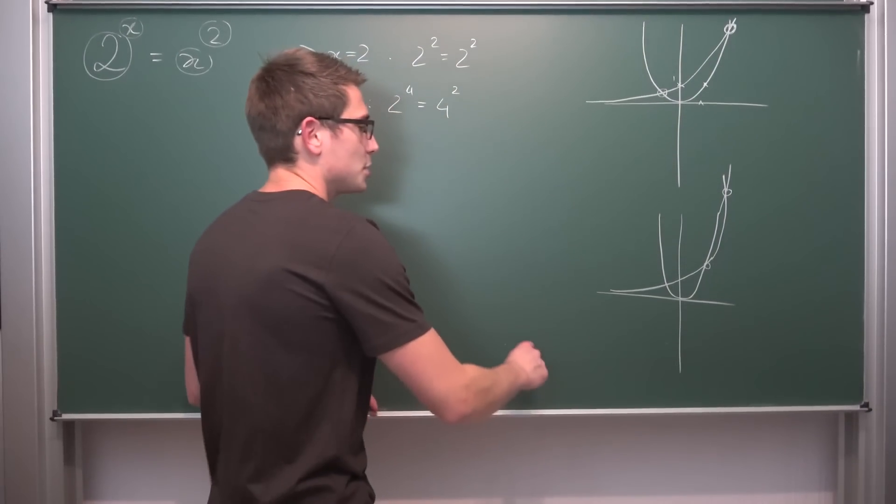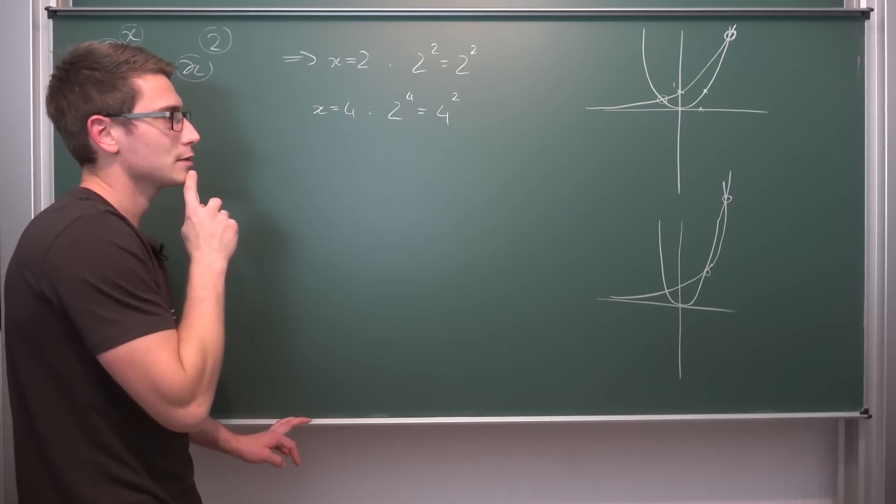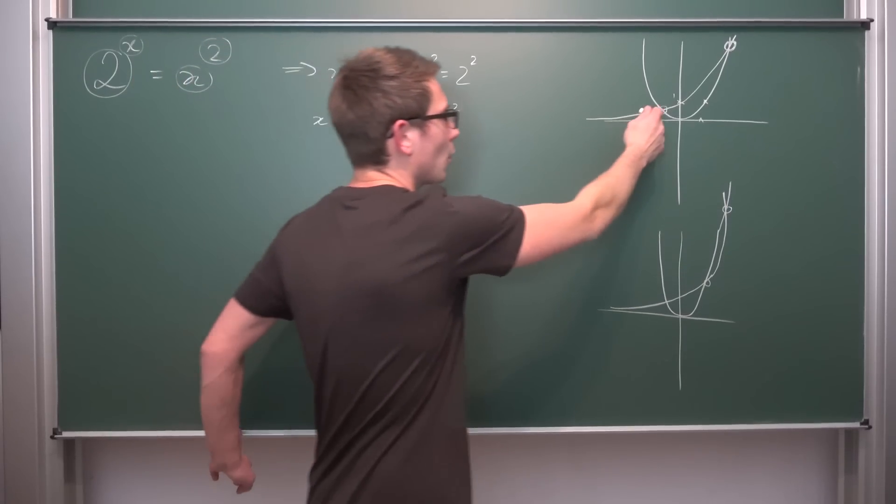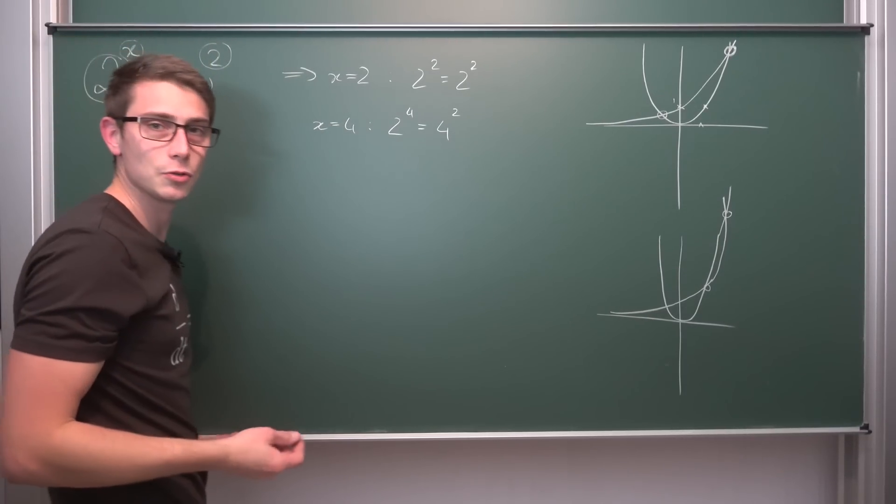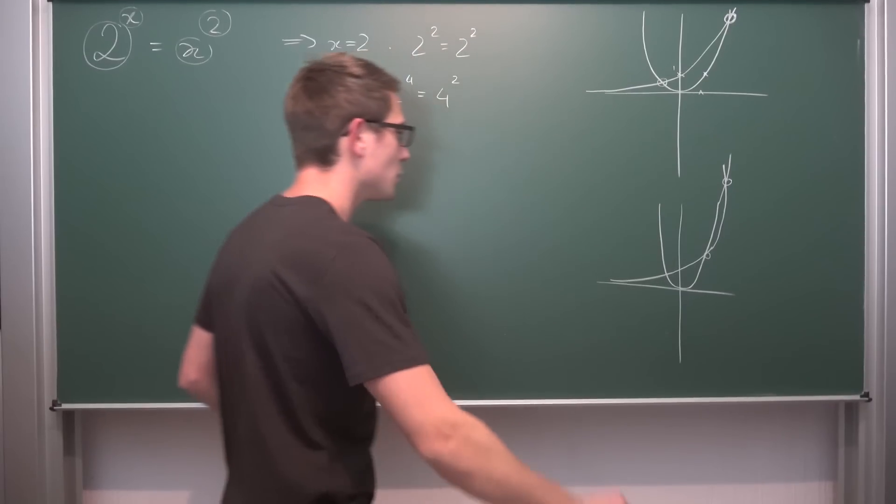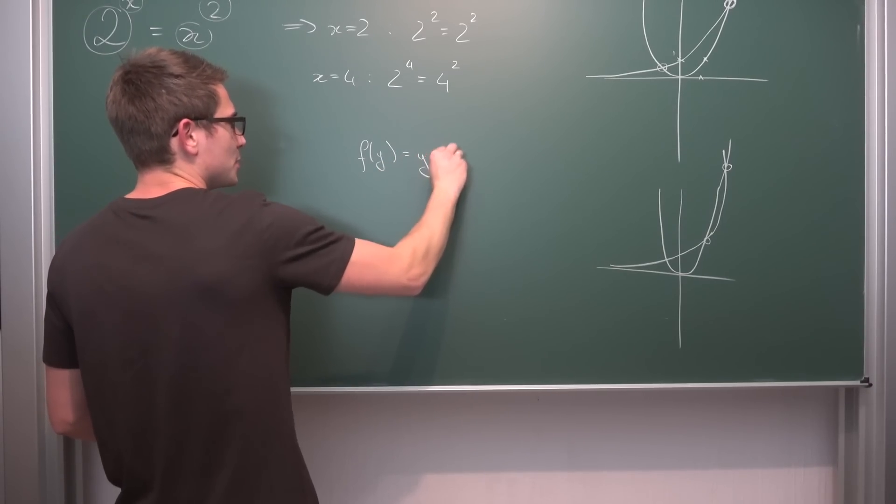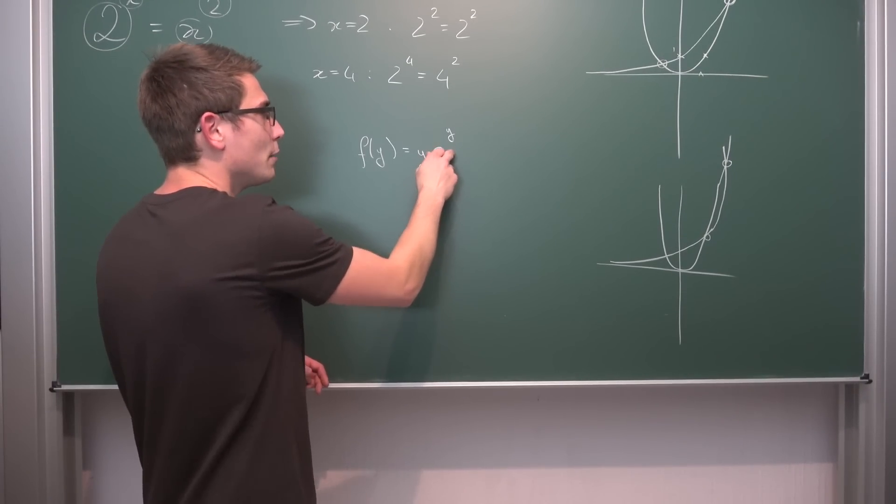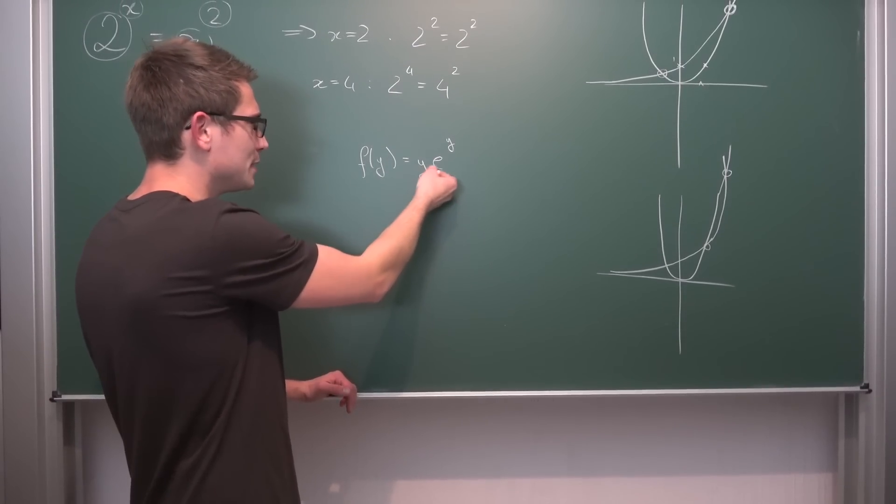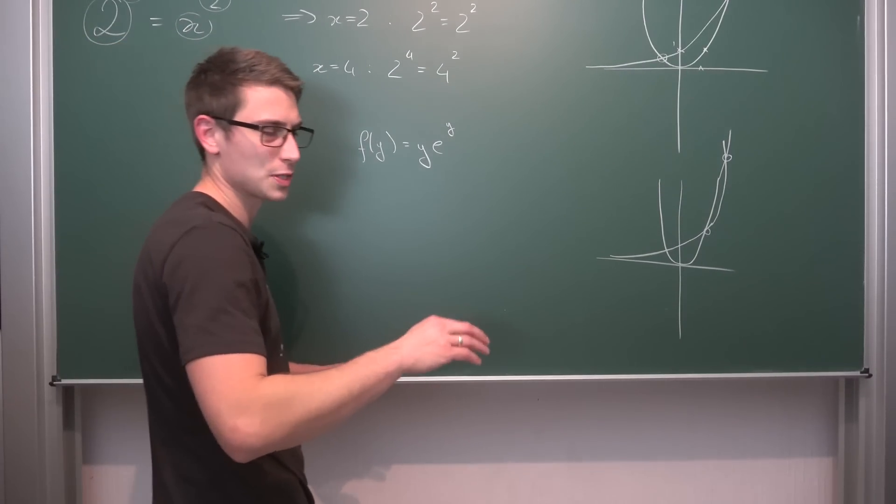Now what about the last solution here which is actually the most interesting one out of the whole bunch? This is when x is less than zero. That's a rather cool solution. Well, the key to solving for what we got right here, this intersection point or the x value, is making use of the Lambert W function. I haven't used this one on the channel in quite a while but I'm going to introduce you to the Lambert W function really quickly.